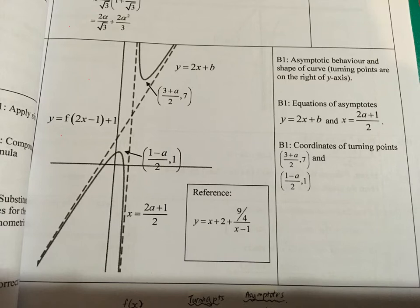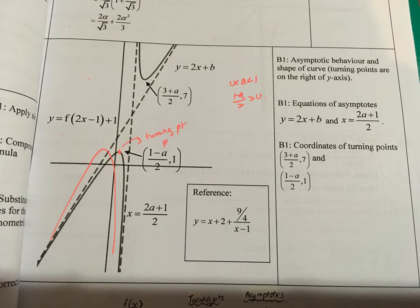Some of you may have drawn the graph with (1 minus a) over 2 on the wrong side. You must remember that because a is between 0 and 1, (1 minus a) over 2 is actually positive. That's why the turning point must be on the right-hand side of the y-axis. I deducted 1 mark for incorrect shape, and a couple of you also lost 1 mark for the asymptote.